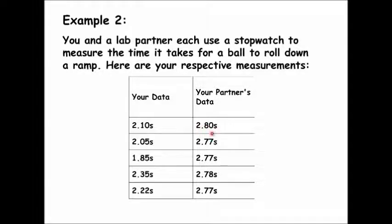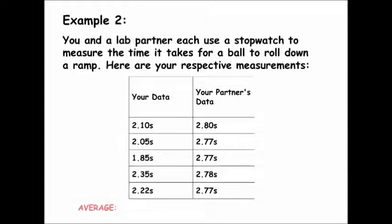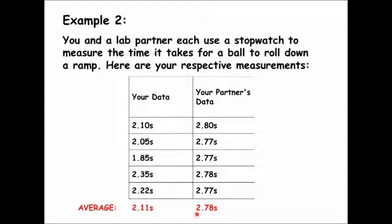Your partner's data shows: 2.80, 2.77, 2.70, 2.78, and 2.77 seconds. The average of your measurements was 2.11 seconds, while the average of your partner's measurements was 2.78 seconds — look how they differ from each other.